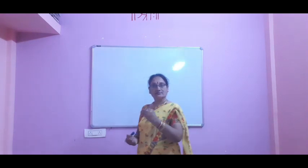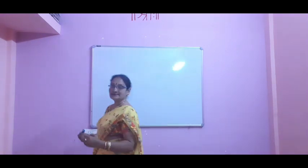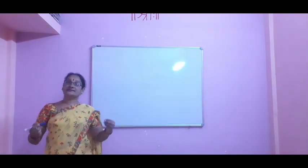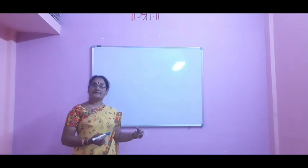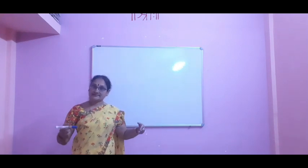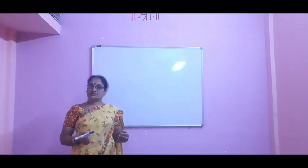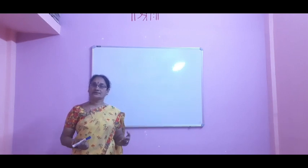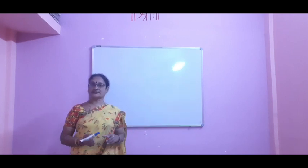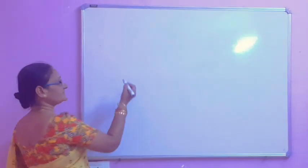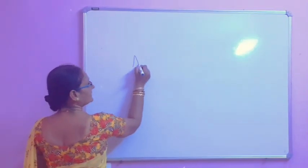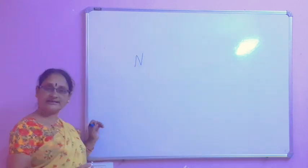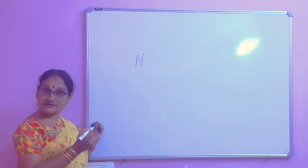1, 2, 3, 4 — like that, these counting numbers are called as natural numbers. In this way, natural numbers came into existence. These numbers came naturally by the people, so these numbers are called as natural numbers. Natural numbers are denoted by the capital letter N. N indicates natural numbers.